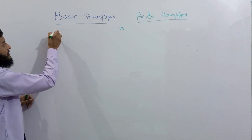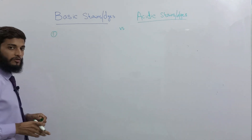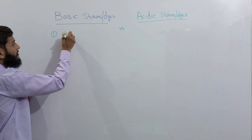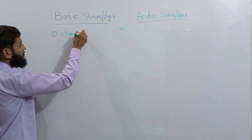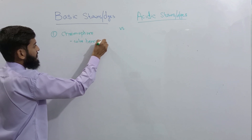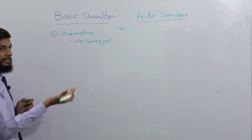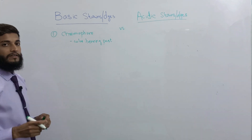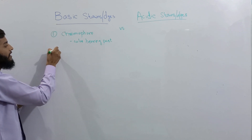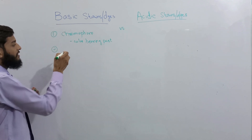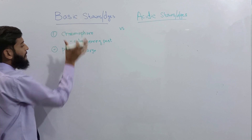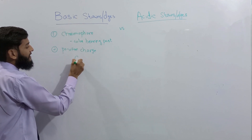First we will discuss basic stains or basic dyes. They are composed of two parts. The first part is a color-bearing part that will color the bacteria during staining — it is known as the chromophore. The second part is a charge-bearing part. Basic stains have an overall positive charge on them, and these positively charged molecules are called cations.